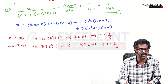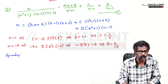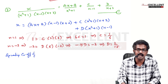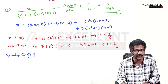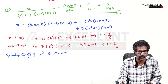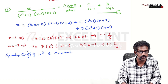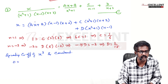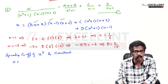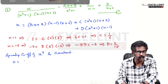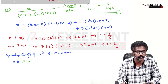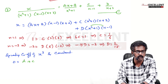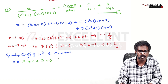To find A, equate coefficients of the highest power x³. Left side has no x³, so coefficient is 0. Right side: from (Ax+B)(x-1)(x+2), x·x·x gives x³ with coefficient A; from C(x²+1)(x+2), x²·x gives x³ with coefficient C; from D(x²+1)(x-1), x²·x gives x³ with coefficient D. So 0 = A + C + D, giving A = -C - D = -1/6 - 2/15 = -5/30 - 4/30 = -9/30 = -3/10.